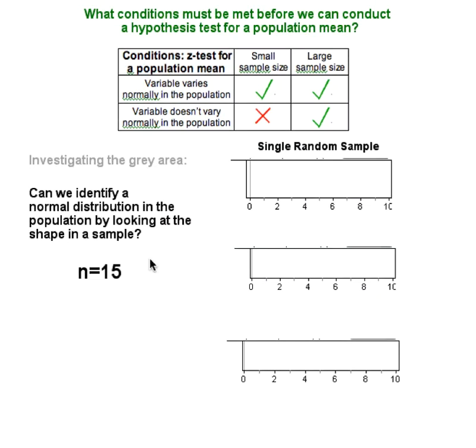Now we're going to investigate the gray area. In practice, you will see statisticians use a z-test when the sample size is smaller than 30, even when they don't know that the variable varies normally in the population. Okay, so when this is done,